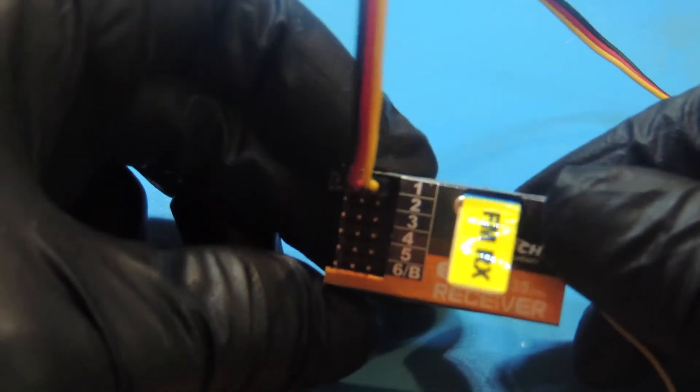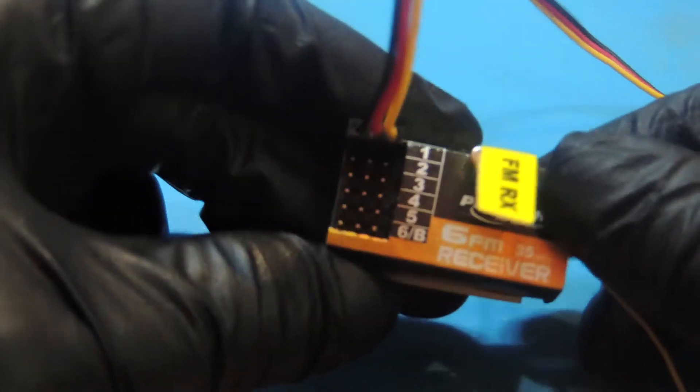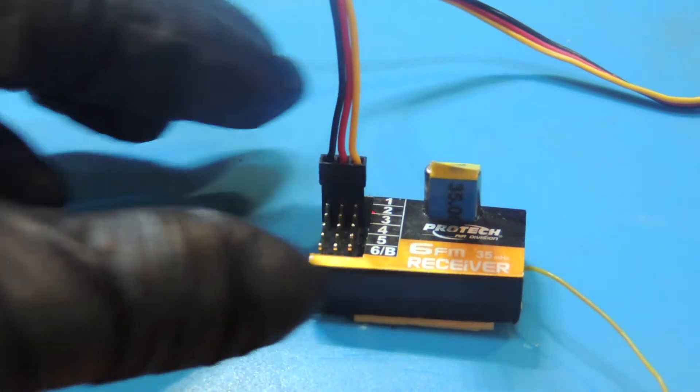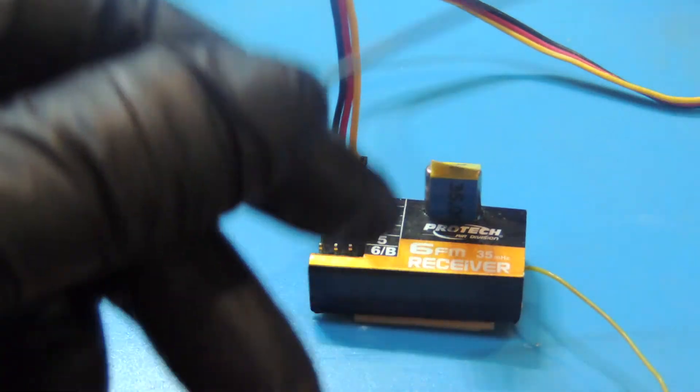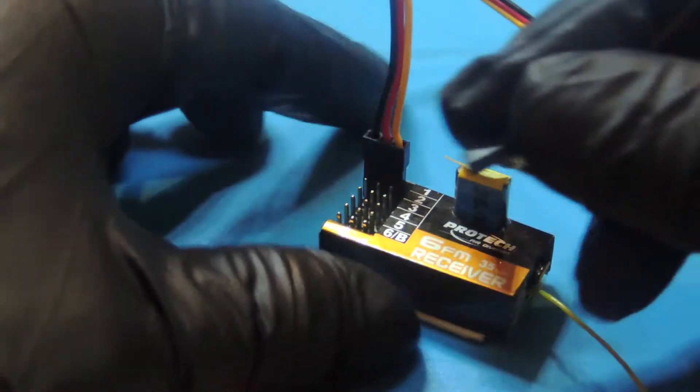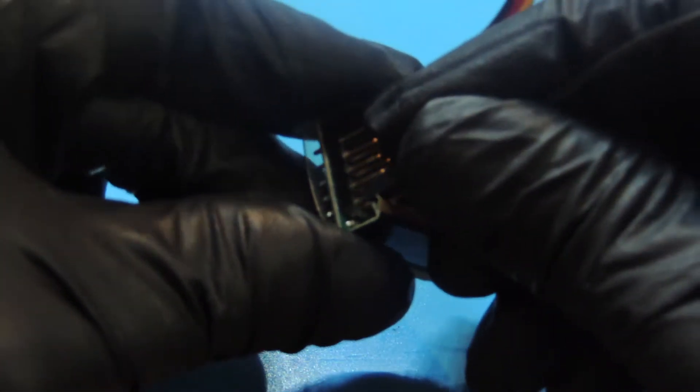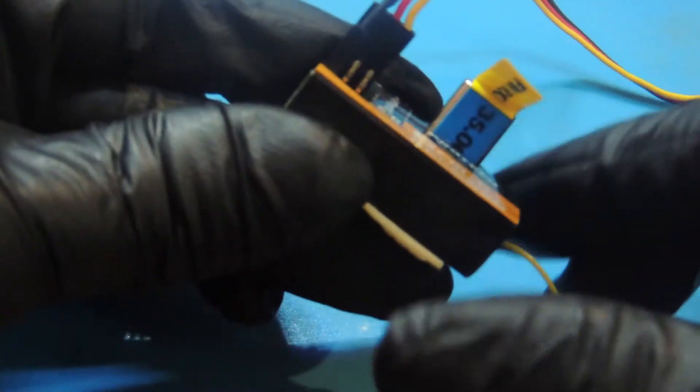I am going to hook up the servo to channel one. You guys can choose any other channel. The black cable goes in the outer pin, that's the negative one. And now we hook up our supply cables and provide six volts to the receiver.